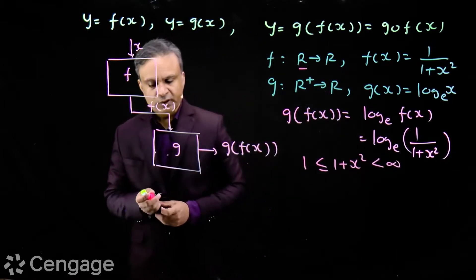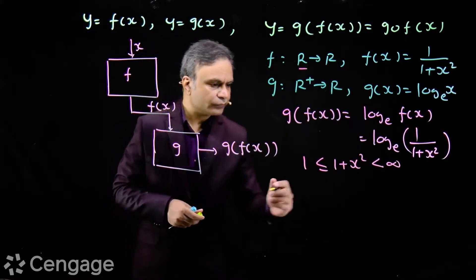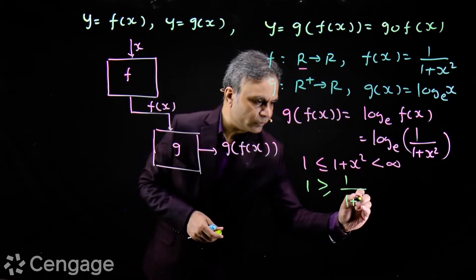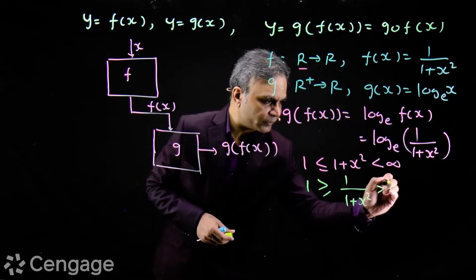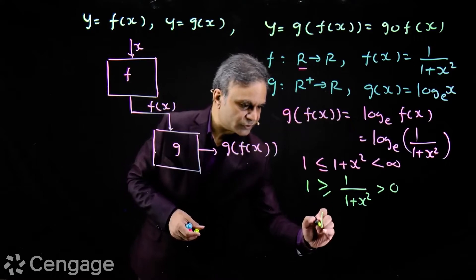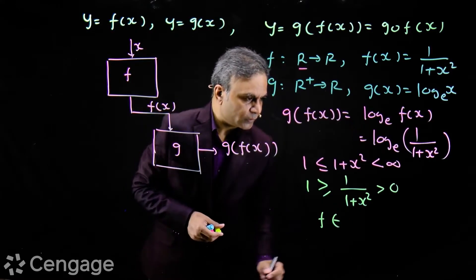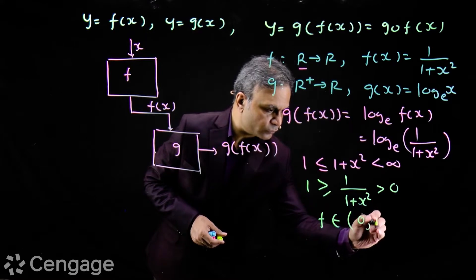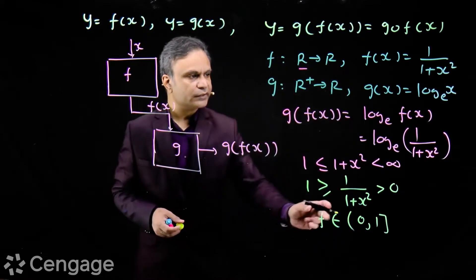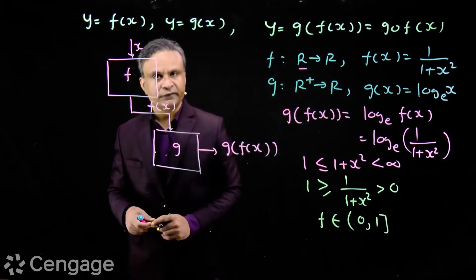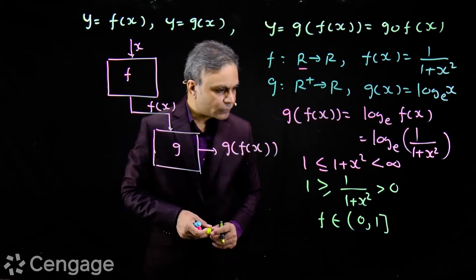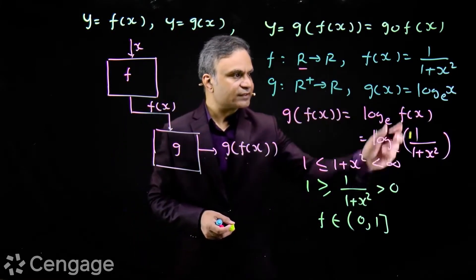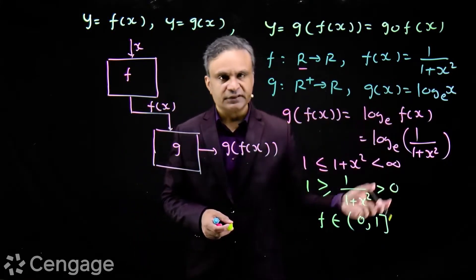Taking the reciprocal, we get 1 ≥ 1/(1 + x²) > 0. So the range of function f(x) is the interval (0, 1] — open at 0 and closed at 1. This is the range of function f(x), and it is a subset of R⁺, so all these values will be acceptable to function g(x).